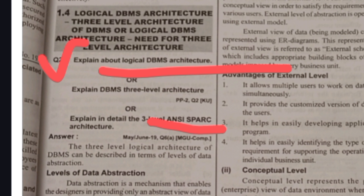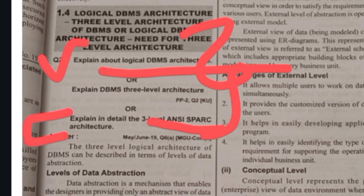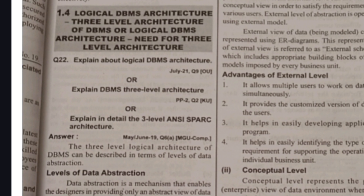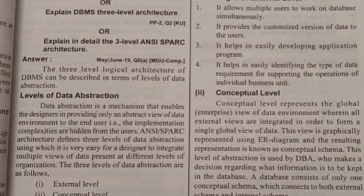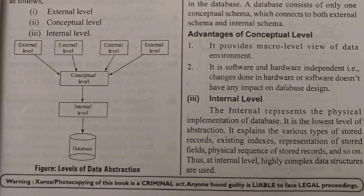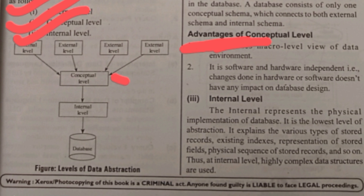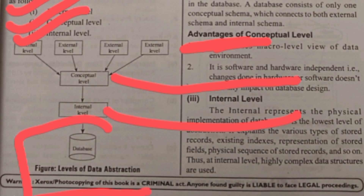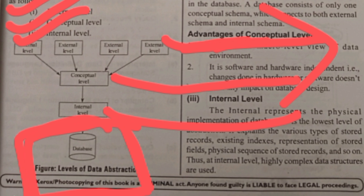The first important question from Unit 1 is: explain about Three Level Architecture, also called ANSI SPARC Architecture or Logical DBMS Architecture. The data stored in a database is divided into three levels: External Level, Conceptual Level, and Internal Level.